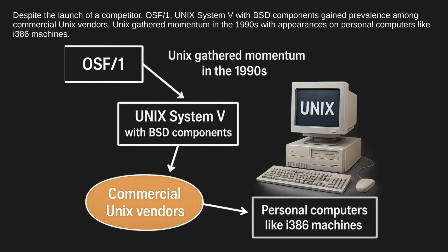Despite the launch of a competitor, OSF/1, Unix System V with BSD components gained prevalence among commercial Unix vendors. Unix gathered momentum in the 1990s with appearances on personal computers like i386 machines.